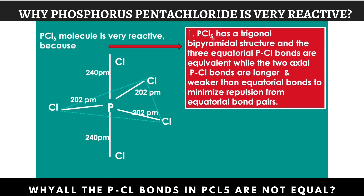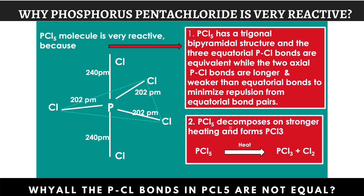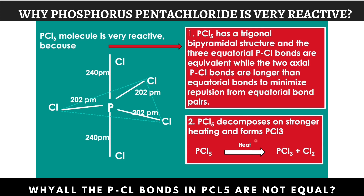Hence, PCl5 is very reactive because it has a trigonal bipyramidal structure where the 3 equatorial P–Cl bonds are equivalent, while the 2 axial P–Cl bonds are longer than the equatorial bonds to minimize repulsion from the bond pair electrons of the equatorial bonds. PCl5 decomposes on stronger heating and forms PCl3, which shows that PCl5 molecule is highly reactive than PCl3 molecule.